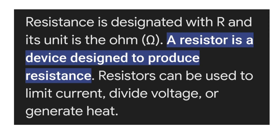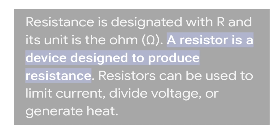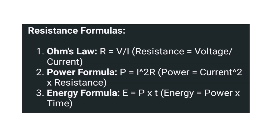Resistance is always measured in ohms. The formula for resistance is R equals V divided by I, where V is the potential difference and I is the electric current.